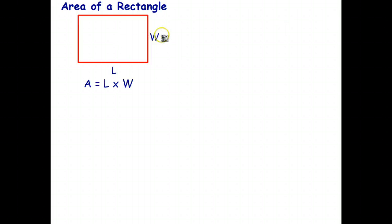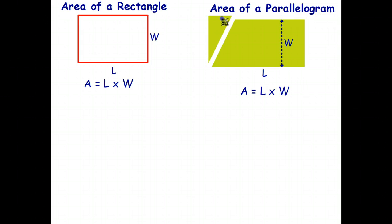So, for example, area of a rectangle is just length times width. Area of a parallelogram is length times width. That's because a parallelogram can be turned into a rectangle.